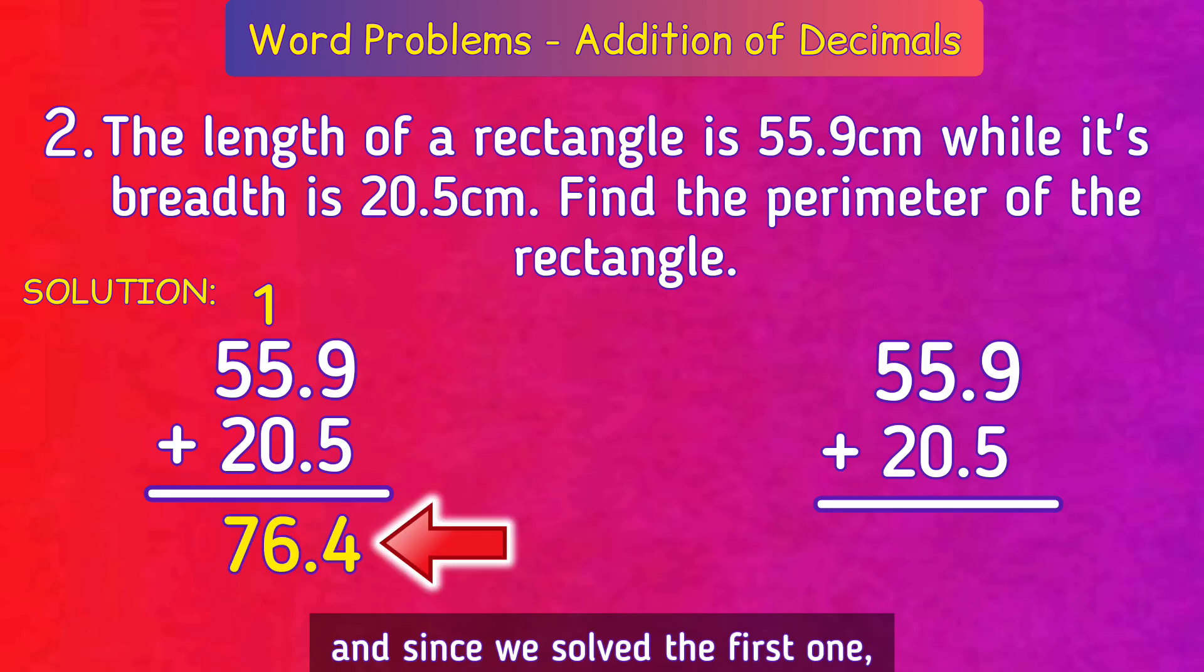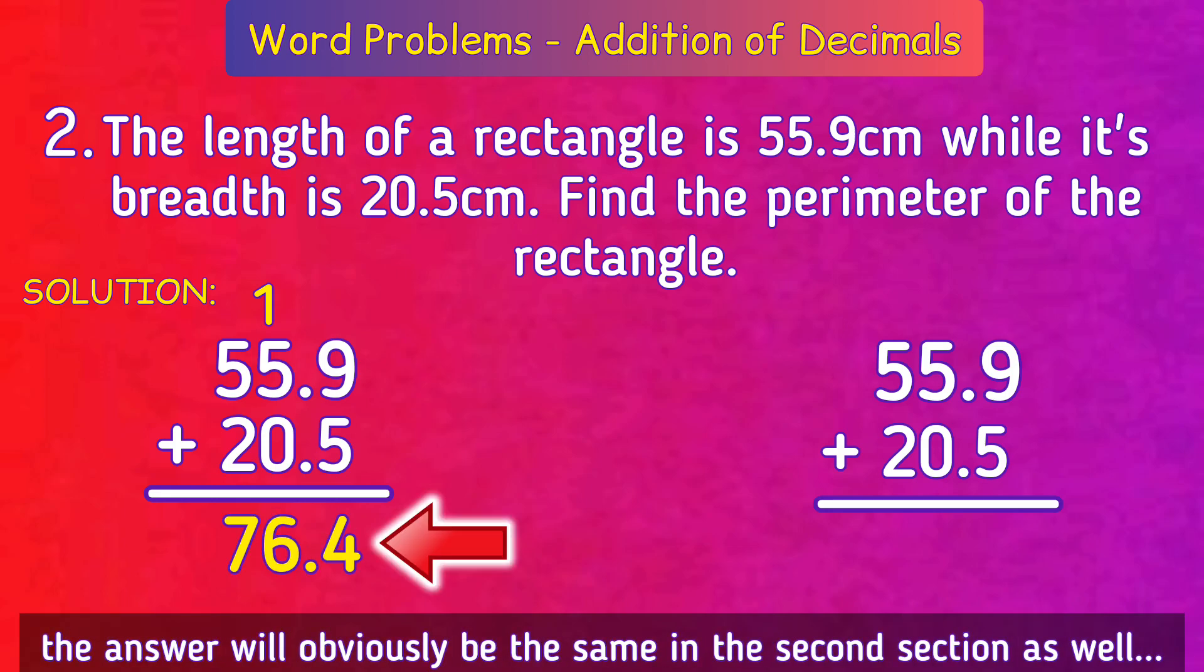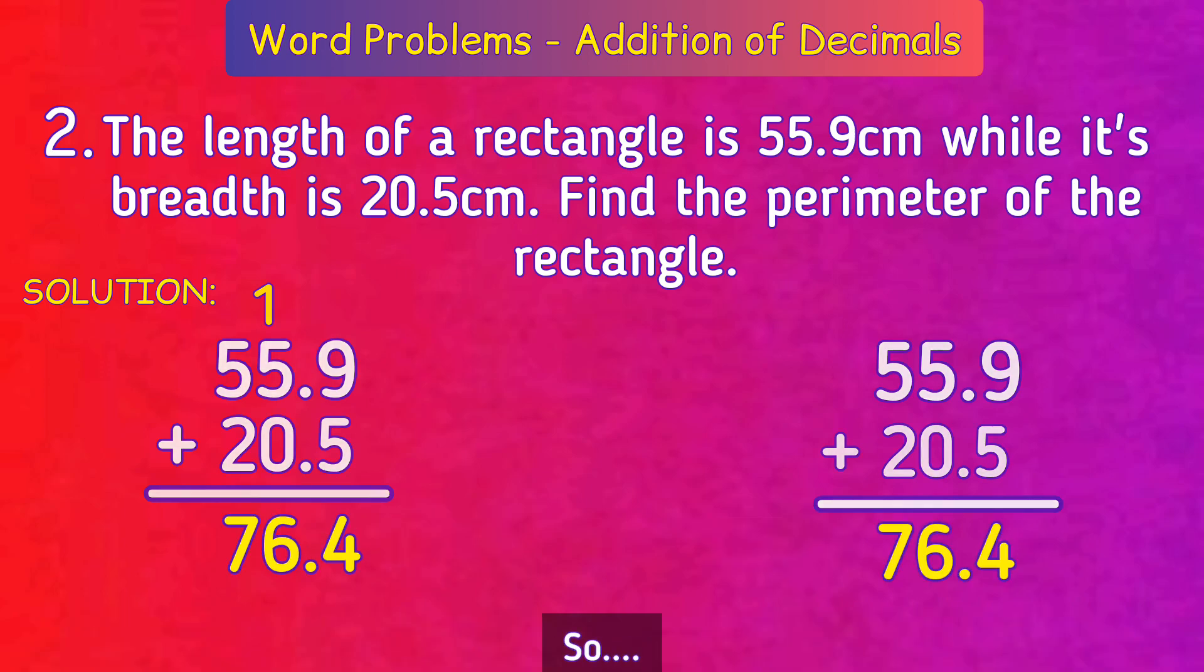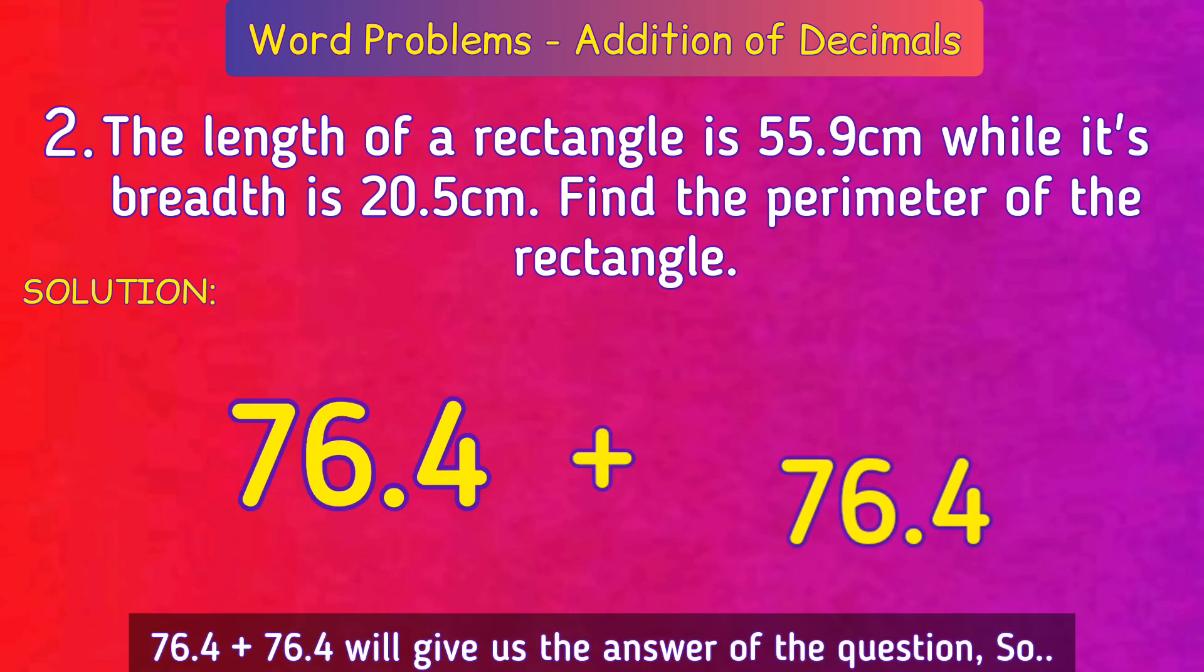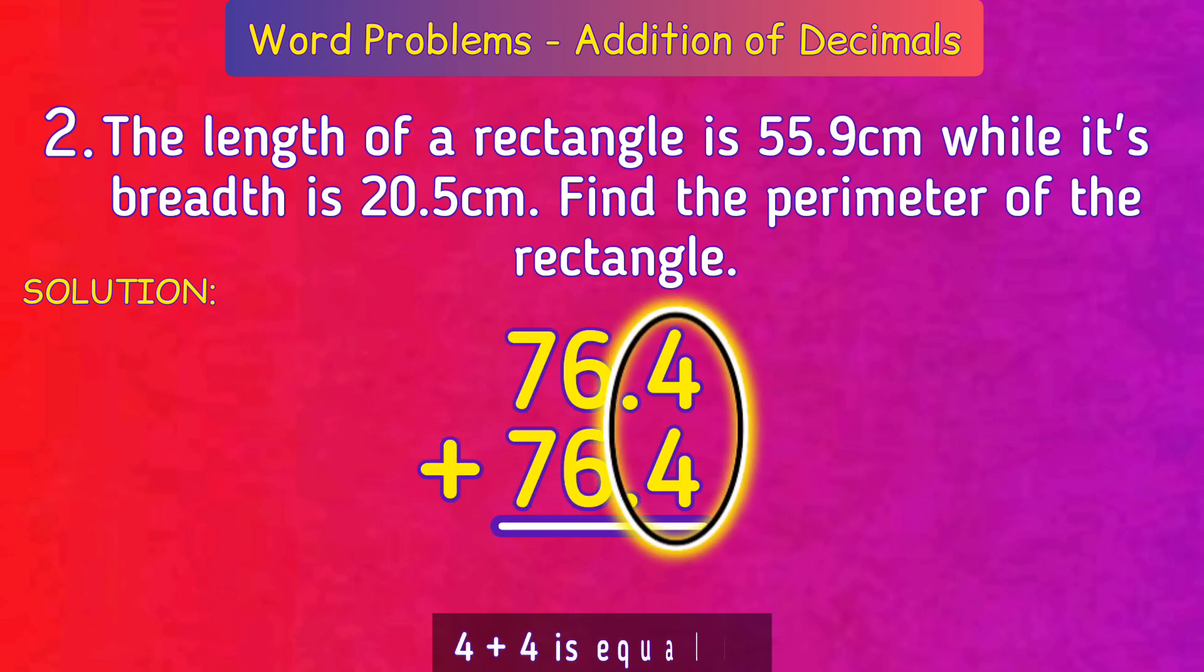Now we know that both these sections are the same, and since we solved the first one, the answer will obviously be the same in the second section as well. So 76.4 plus 76.4 will give us the answer to the question.